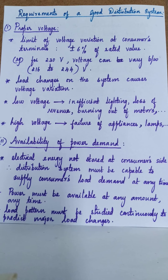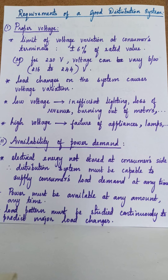The load demand varies throughout the day — it may be more in the morning, less during daytime, and increase again in the evenings. So the distribution system must be able to supply load as needed. The operating staff must continuously monitor and study the load pattern to predict sudden variations. For example, if a large factory operates from 7 AM to 9 PM, the staff should know that load demand will be very high during that period. The load pattern must be studied continuously to predict major load changes.